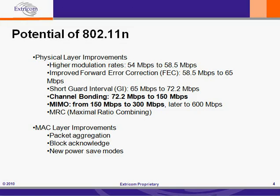Taking a step back from the list, it's pretty clear that in the physical layer improvements, the two most impacting improvements are channel bonding, which doubles the throughput, and MIMO, which also doubles the throughput. So we're going to focus a lot in our discussion on both channel bonding and MIMO.